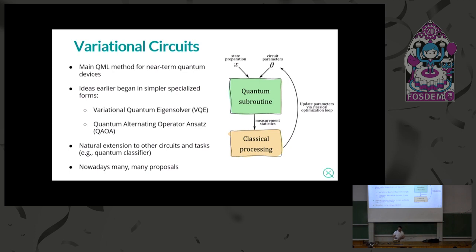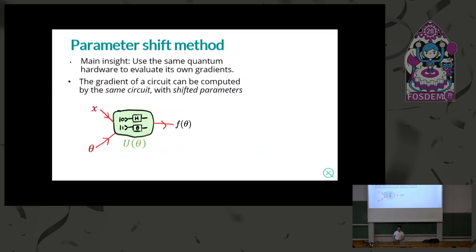We want to train variational quantum algorithms using workhorse algorithms developed over the last 20–30 years in machine learning. One technique is called the parameter shift method. Initially we used gradient-free methods to train quantum circuits, but this shifted to an analytic method of computing gradients from quantum devices. The key insight is that we're able to use the same quantum hardware to evaluate its own gradients — avoiding the need to classically simulate the circuit to get gradients, which would be intractable as quantum device sizes increase.